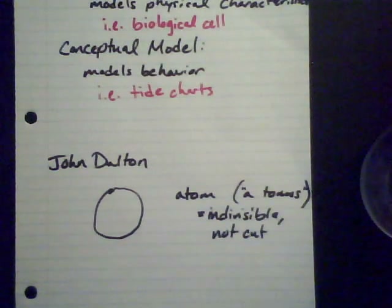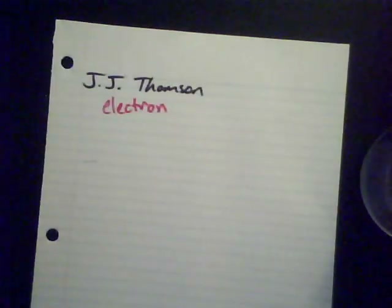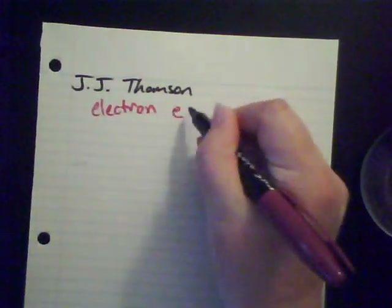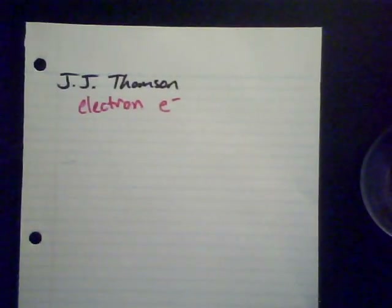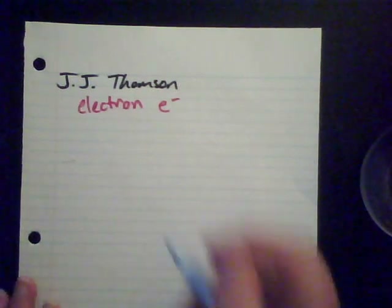Along came a man named J.J. Thompson, a British scientist, who discovered the electron — the first subatomic particle ever discovered. When we use electrons in diagrams, I usually abbreviate them with an E to the minus sign, and we'll talk about why that is in a second. The electron was discovered through a couple of different experiments.